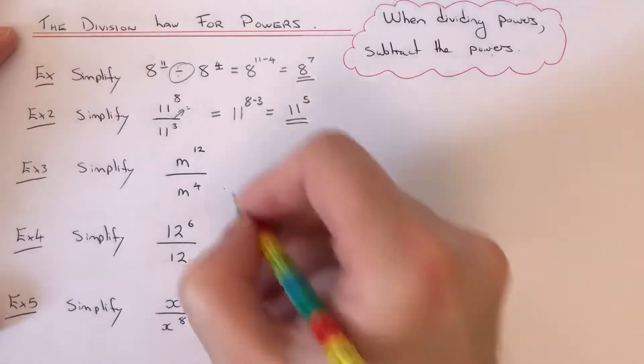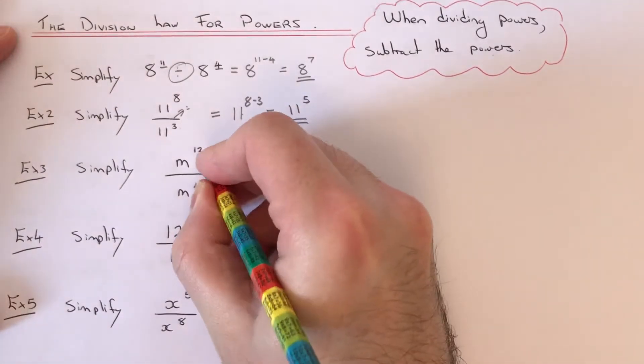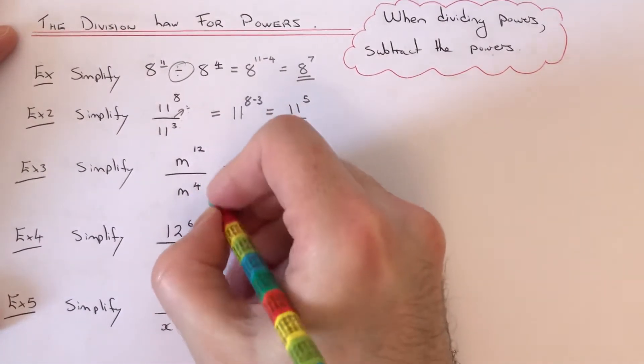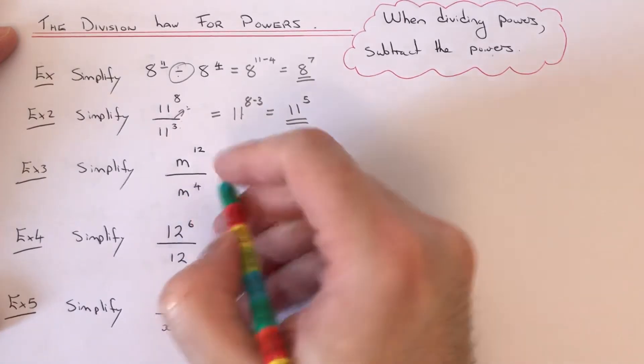Let's move on to example 3. This time we've got m to the power of 12 divided by m to the power of 4. Again, our base is m, and we've got to take the powers away.